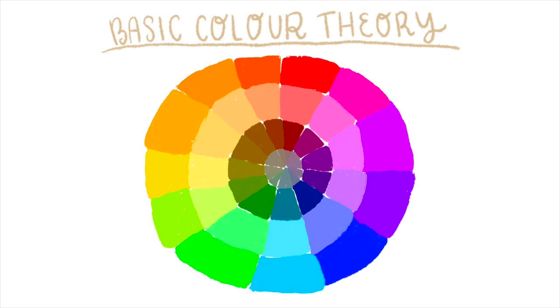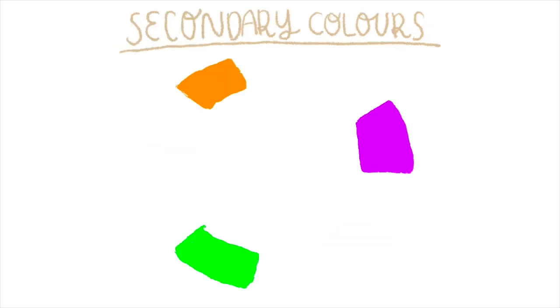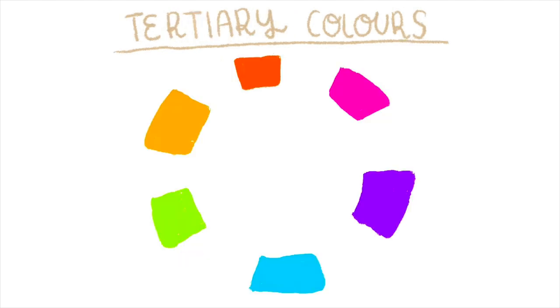The first thing you need to know and be very conscious of is the color wheel. On the color wheel we have three primary colors: yellow, blue, and red. When we mix these we get the secondary colors: orange, purple, and green. When we mix primary and secondary colors we get the tertiary colors, which are blue-green, blue-violet, red-violet, red-orange, yellow-orange, and yellow-green. You can keep mixing these colors in different quantities and you will get all the colors of the rainbow — that's basically how you make a color wheel.